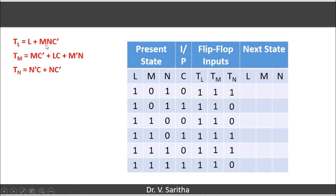Now when we see the expression for Tl equal to L plus MNC bar, whenever L is 1, Tl will become 1. When Tl is 1, that is input of T flip-flop is 1, output is complement of the previous state. So here present state is 1, so next state will become 0.